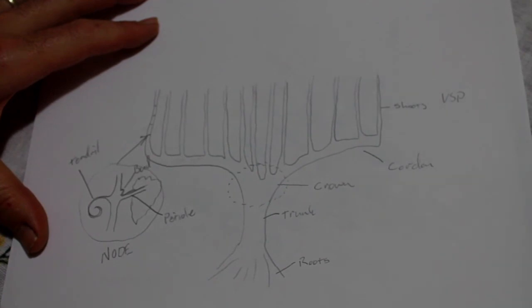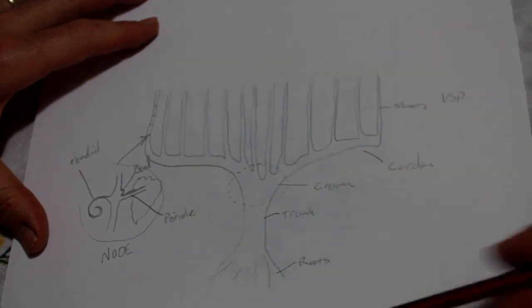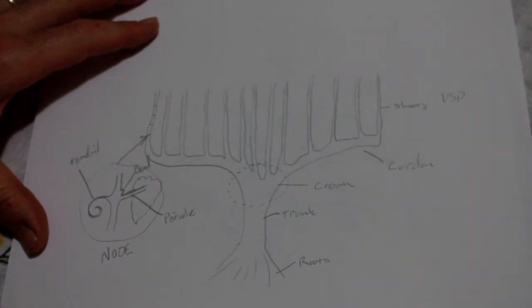All right, you need to do one of these diagrams in pencil, using solid lines, making it look as realistic as possible, and that is your first homework assignment for viticulture. Thank you.